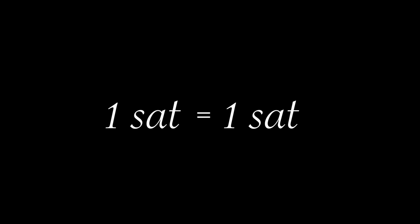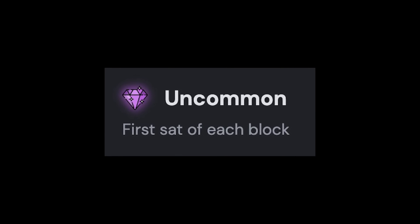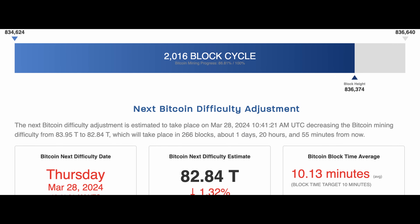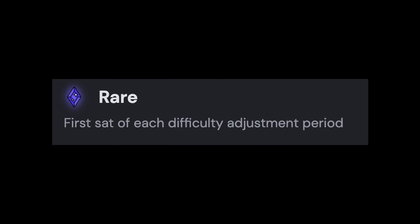Since we can track and transfer individual sats, it's only natural for degens like myself to want to collect them. Isn't one sat just one sat? Not really. Bitcoin has periodic events — some frequent, some uncommon, some incredibly rare — and combined, those events form a system of rarity. Every 10 minutes we get a new Bitcoin block; the first satoshi of a new block is an uncommon sat. Then there are difficulty adjustments every 2,016 blocks, roughly every two weeks, where the Bitcoin network adapts to changes in hash rate — the first sat of that block is considered a rare sat.